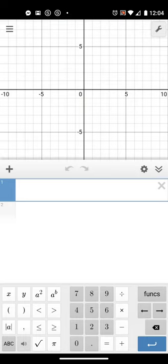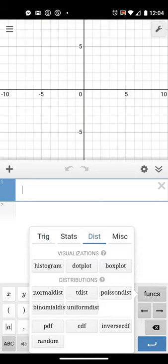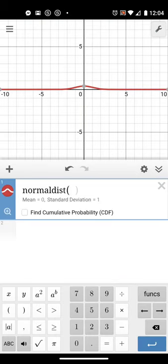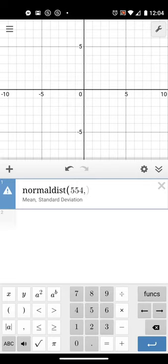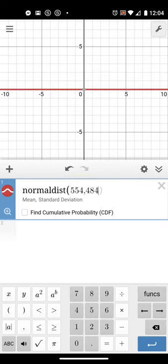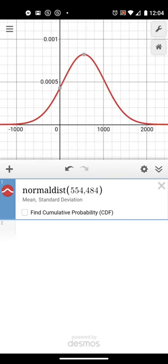In 10.2 here we have a normal distribution with a sample mean of 554, rounded off, and the data itself distributes according to a standard deviation of 484. So if we model the data as a normal distribution, we get this.